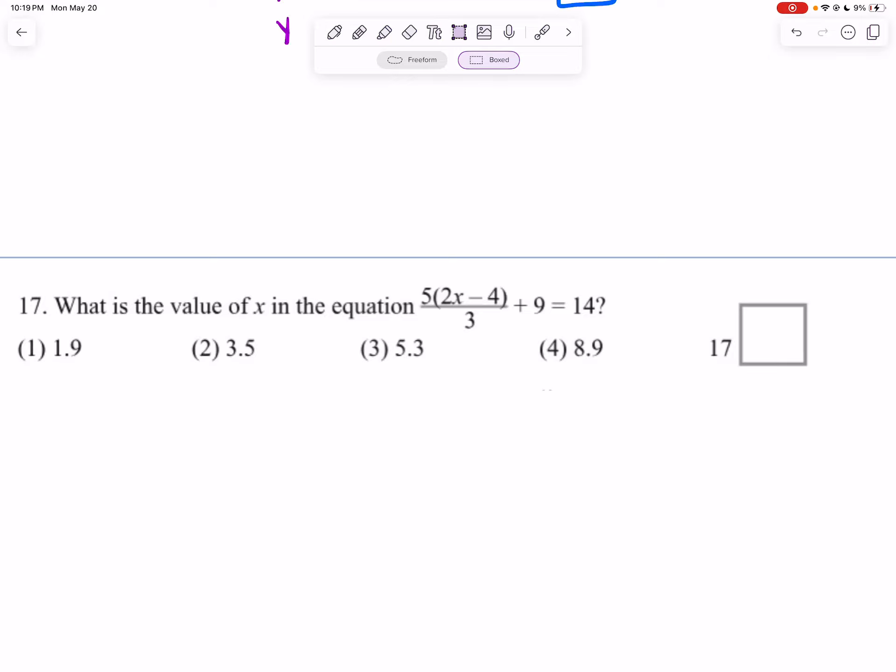Number 17. What is the value of x in the equation 5 times 2x minus 4 divided by 3 plus 9 equals 14?